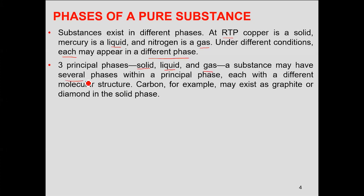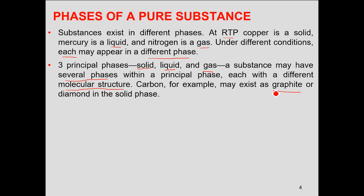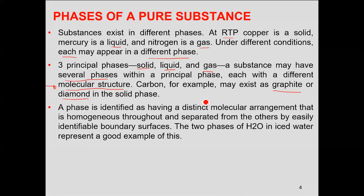Within the principal phases, several sub-phases may exist, each with a different molecular structure. For example, carbon in solid form may exist as graphite, which has a hexagonal crystal structure, or as diamond, which has a tetrahedral crystal structure. Similarly, iron or steel in solid form can exist in FCC or BCC crystal structure — as ferrite or austenite. Depending upon the atomic or molecular arrangement, you may have different structures corresponding to different phases.